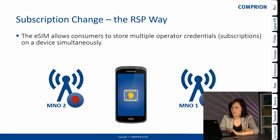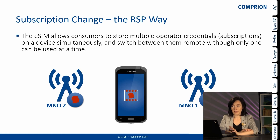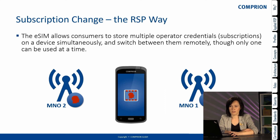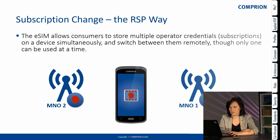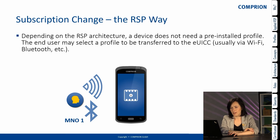The RSP way works differently. The eSIM allows customers to store multiple operator credentials or subscriptions — also called profiles — on the device simultaneously. We can have multiple profiles on the device, but we still need to enable them; by switching remotely we enable a subscription or profile, and only one can be active at a time. An additional feature of the RSP scheme is that we don't always need a pre-installed profile, because a profile can be transferred using Wi-Fi, Bluetooth, or another technology.